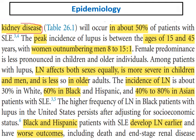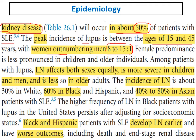Kidney involvement is very common in lupus — about 50 percent of lupus patients will have nephritis at some time. The peak incidence for lupus as a whole is between 15 and 45 years of age, with a female-to-male ratio of nine to one. However, this female predominance is less pronounced in children and older individuals.